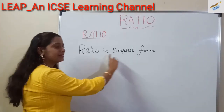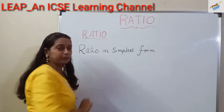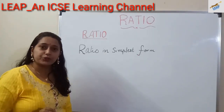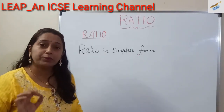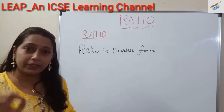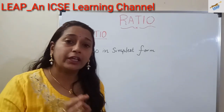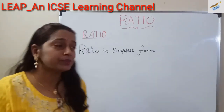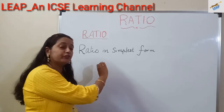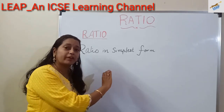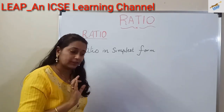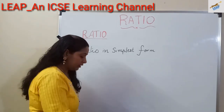Ratio in simplest form. A ratio A is to B is said to be in simplest form if the terms A and B have no common factor other than 1.